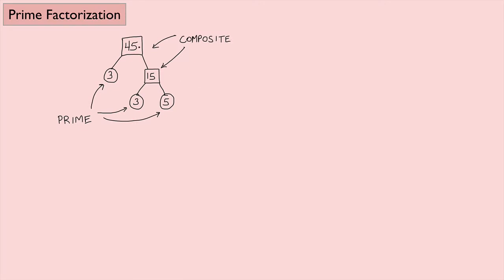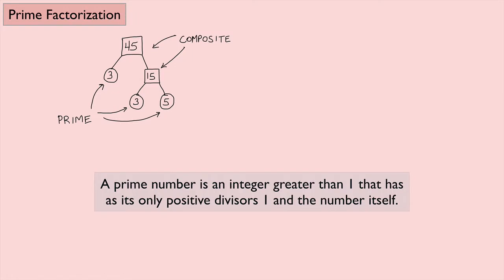In other words, 45 can be broken down into 3 and 15. But 3, well, we just stop at 3. That's because of the definition of a prime number. A prime number is an integer greater than 1 that has as its only positive divisors 1 and the number itself.